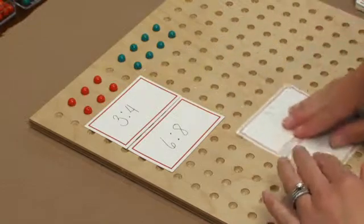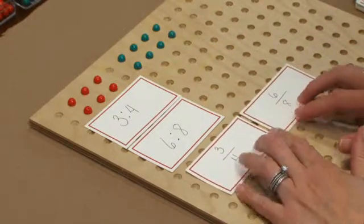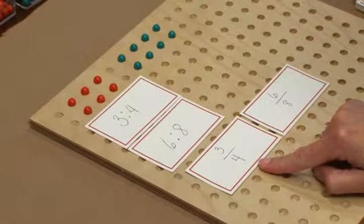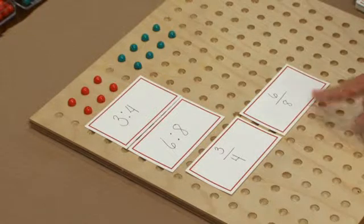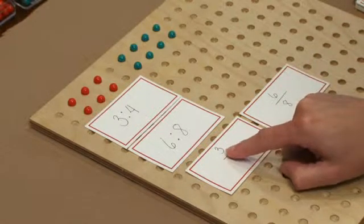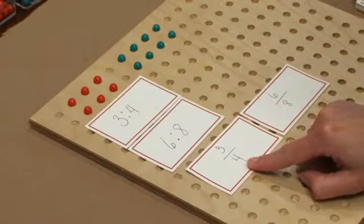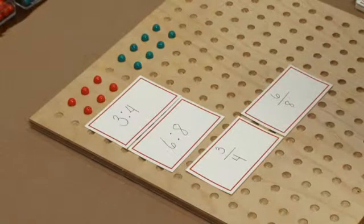The students can bring these down and tell me how we would take this first fraction and use a multiple to get it to the second fraction. And they can explain that if we multiply the top number by two, we also have to multiply the bottom number by two. And that's another way to show the relationship between these two numbers.